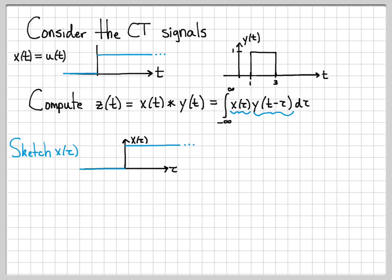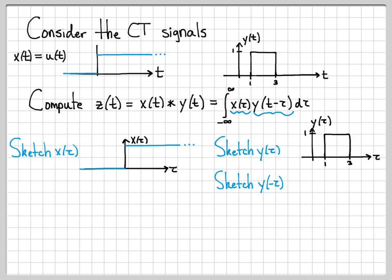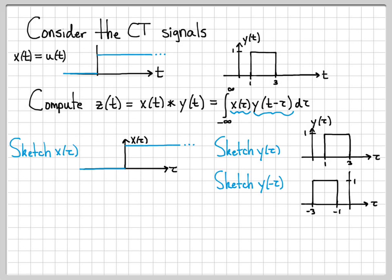The one that's a little bit more tricky is y of t minus tau. To sketch that, I like to break it down into steps. The first thing I like to do is sketch y of tau, which looks just like y of t except with t's replaced by tau's. But y of tau is not what I want — what I want is y of t minus tau. So as a next step, I sketch y of minus tau. It looks just like the original signal except it's been flipped about the origin. When we go from tau to minus tau, we do a time reversal. So this signal is going to be zero everywhere except between minus three and minus one.